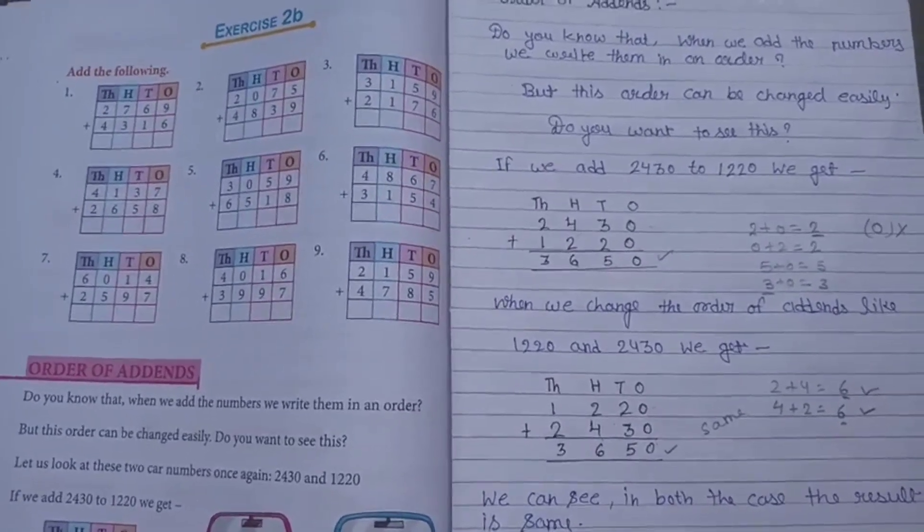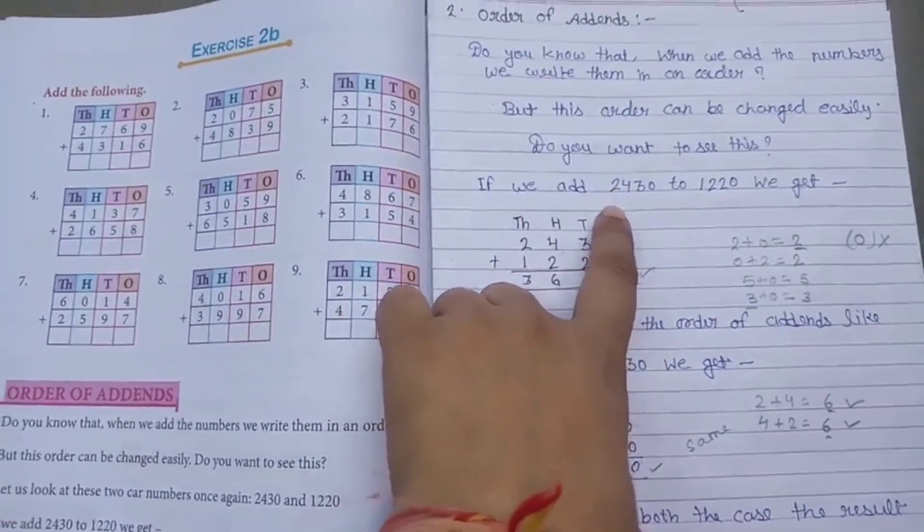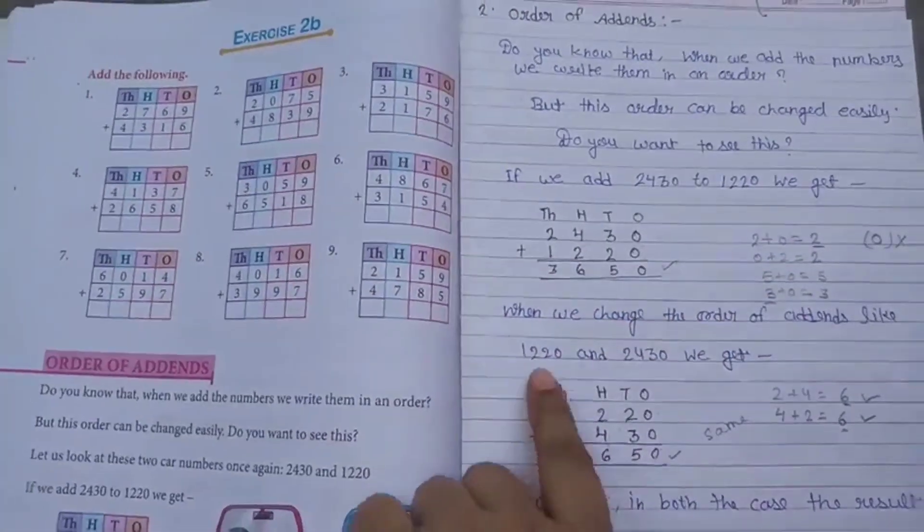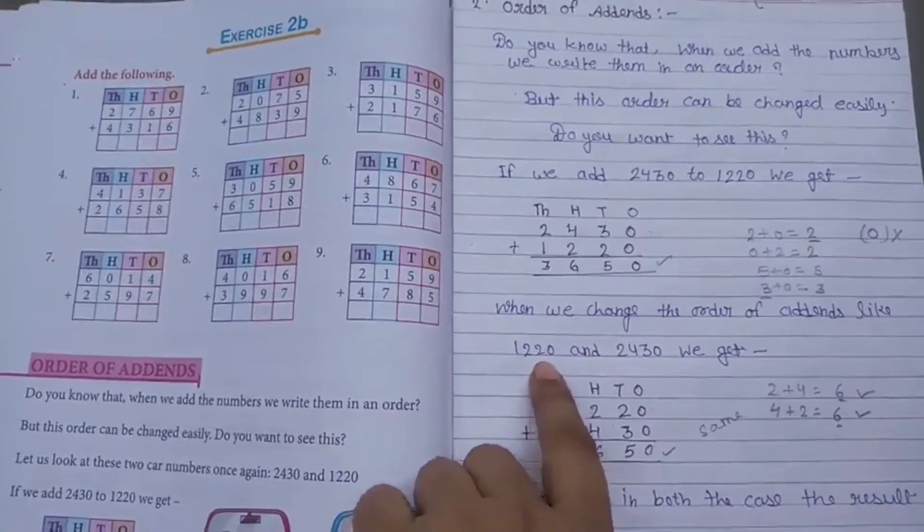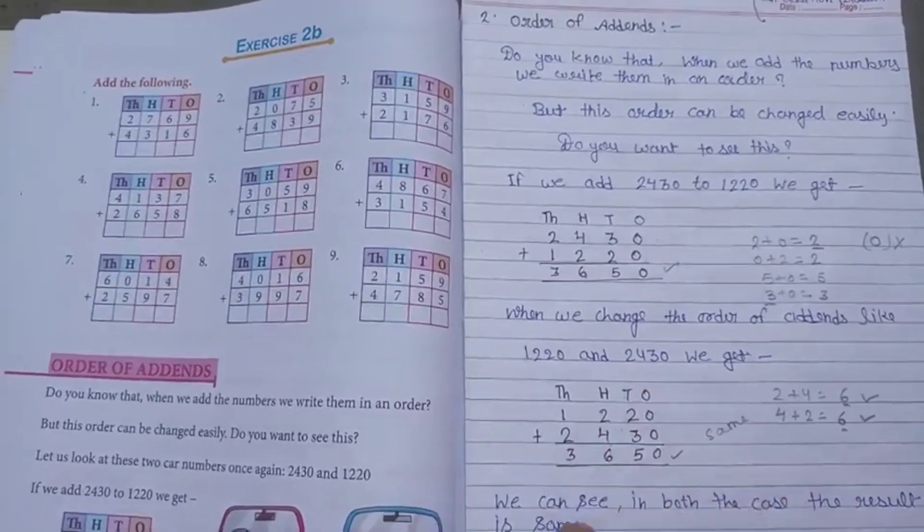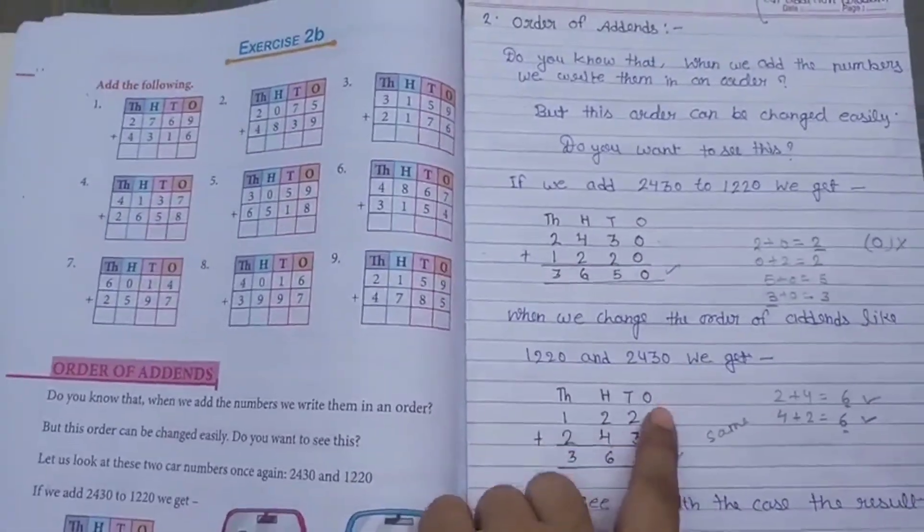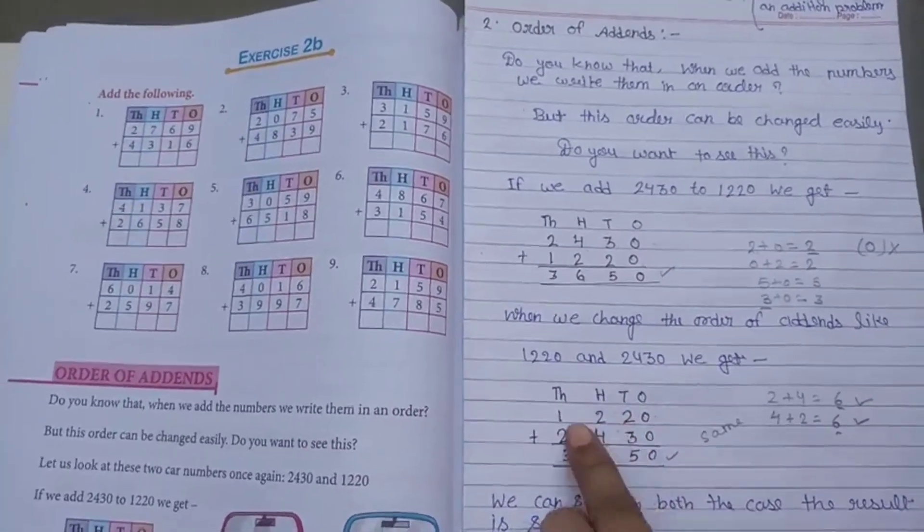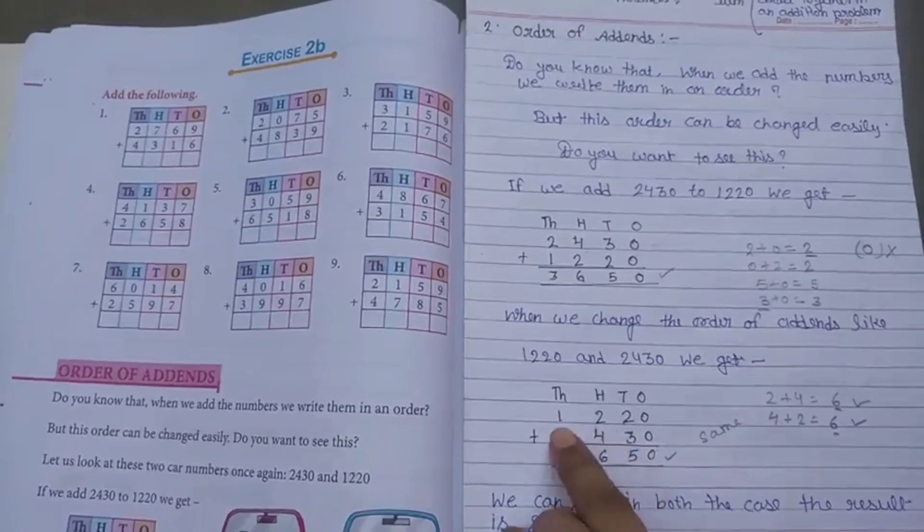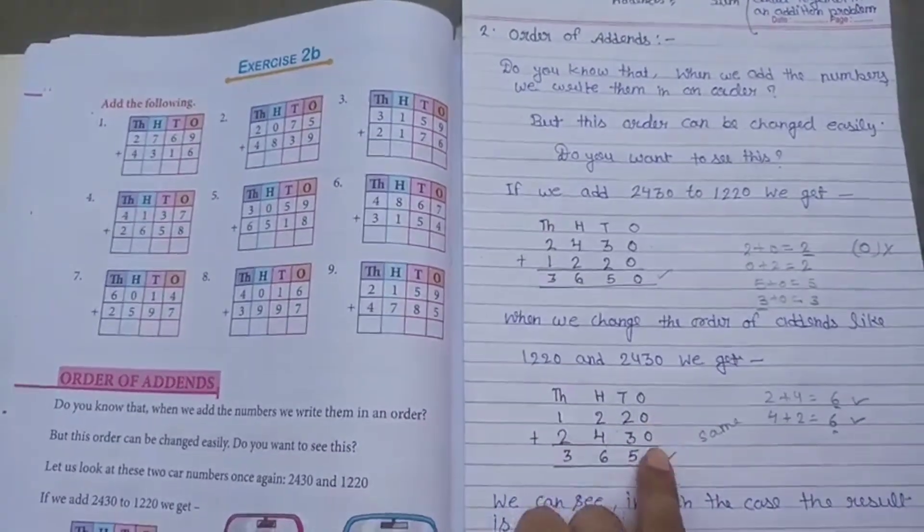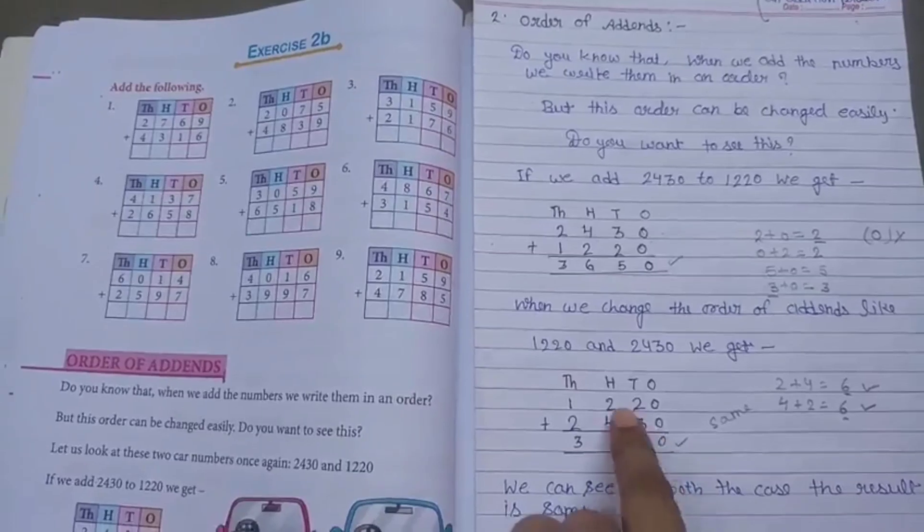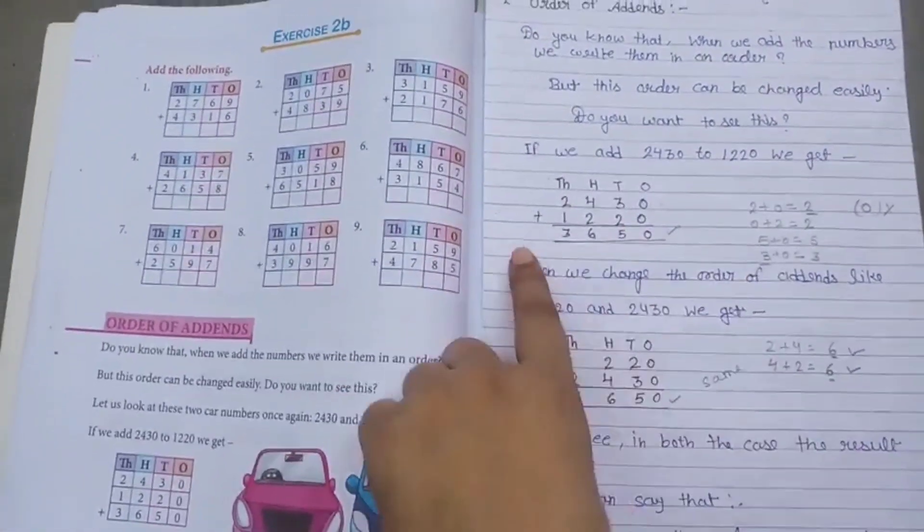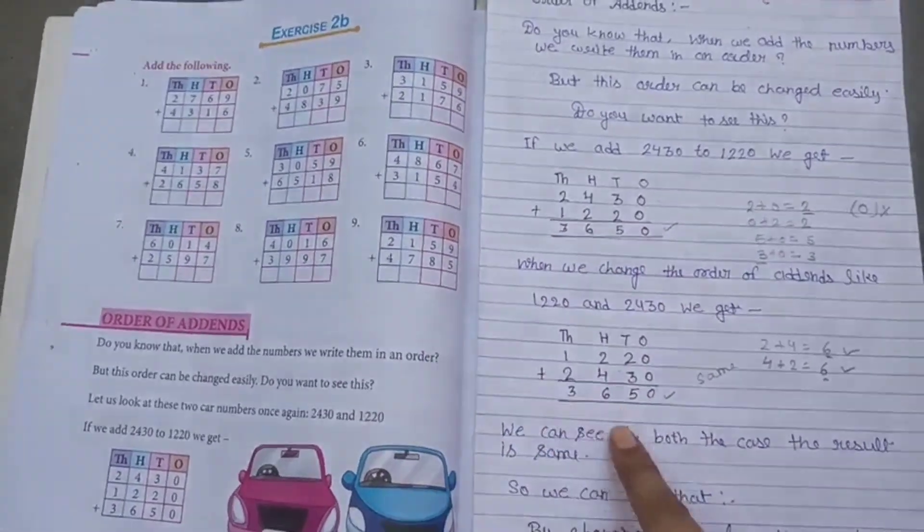We change the order: before 2430 and then 1220, but now 1220 and then 2430. According to place value: ones, tens, hundreds, thousands. We will put 0, 2, 2, 1 just below 0, 3, 4, 2, then add: 0 plus 0 is 0, 3 plus 2 is 5, 4 plus 2 is 6, and 2 plus 1 is 3. Answer: 3650.